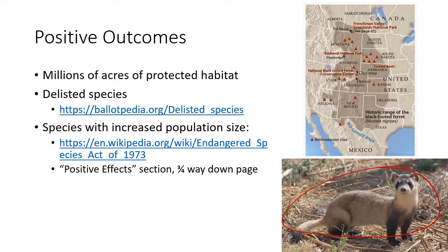There are delisted species — about 11, I believe, have been delisted. I would encourage you to check out the Wikipedia page on the ESA for species that have increased in population size. One example is the black-footed ferret, a Colorado example. Near Greeley in northern Colorado is the National Black-Footed Ferret Conservation Center. The black-footed ferret used to exist across an entire region but was down to only a handful of individuals. Through breeding programs, listing on the ESA, and critical habitat protection, its population has risen and they're doing rather well now.